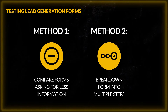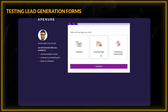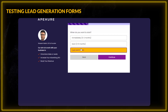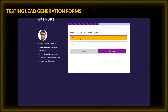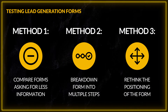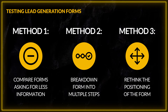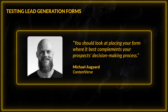Method number two: break down the form into multiple steps. If you can't remove any form fields, you can split the form into steps. It's a neat way to gamify your lead generation and improve the overall user experience by asking visitors one question at a time without overwhelming them. Method number three: rethink the positioning of your form. Placing your lead generation form in the hero section might not always be the best bet. According to Michael Agard of ContentViv, you should look at placing your form when it best complements your prospects' decision-making process.